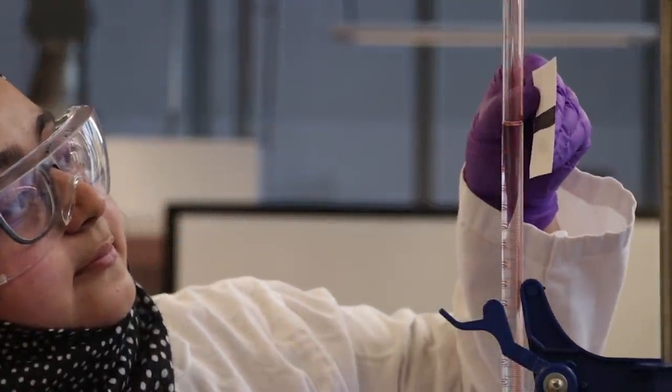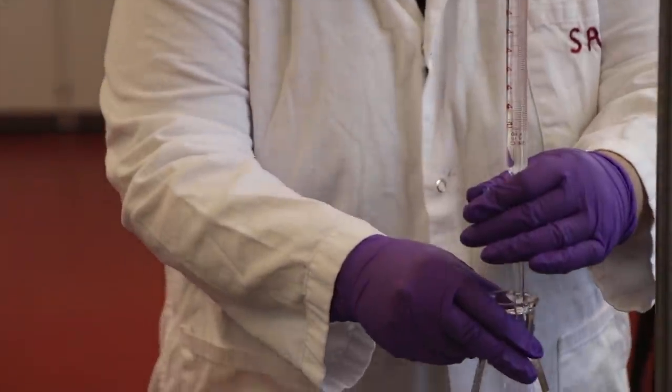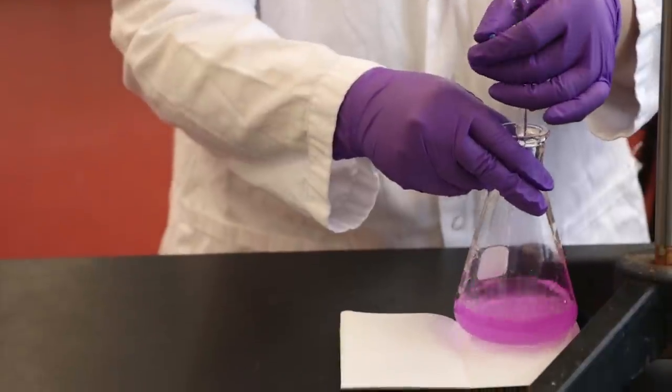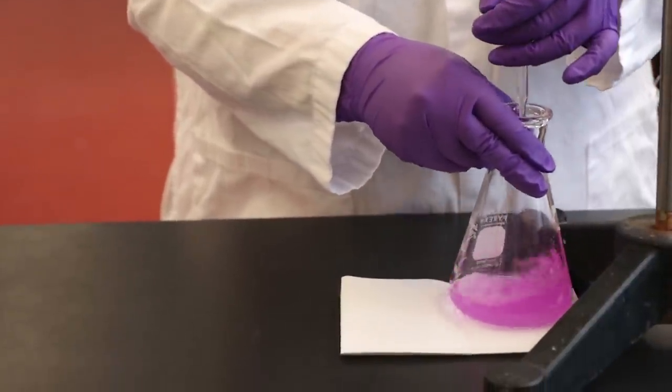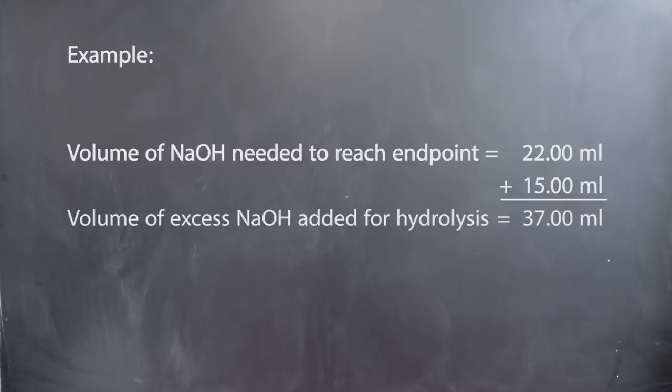Once the endpoint is reached, determine the volume of sodium hydroxide that was needed to reach the endpoint. Then dispense this volume and an additional 15 mL of sodium hydroxide to the flask to hydrolyze the aspirin. For example, if it took 22 mL to reach the endpoint, we need to add 22 mL plus 15 mL, which equals 37 additional mL of sodium hydroxide for the hydrolysis.